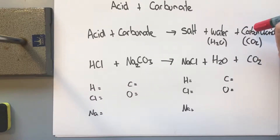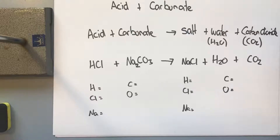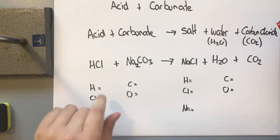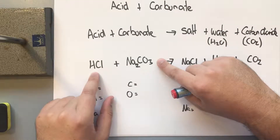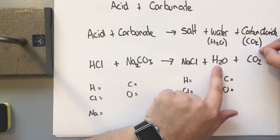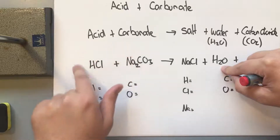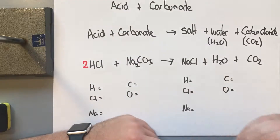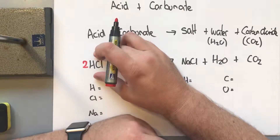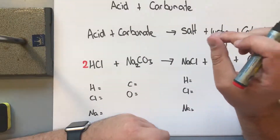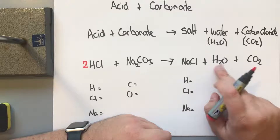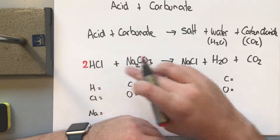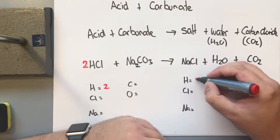Let's start with hydrogen. We have one hydrogen on the reactants side, but two hydrogens on the products side in H₂O. So we put a two in front of the HCl, meaning two molecules of hydrochloric acid are reacting with sodium carbonate. That gives us the two hydrogens needed for the water molecule. Now there are two hydrogens on each side, so the hydrogens are balanced.